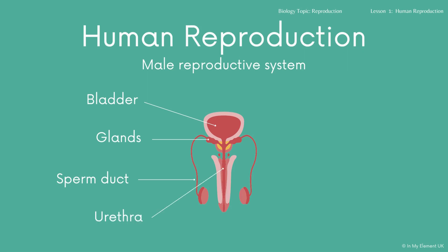You've also got the urethra, which is linked to the bladder. You can see the bladder up here and the glands linked either side. We've also got the erectile tissue, which surrounds the urethra. And we've got the testes — that's where the sperm will be stored. The scrotum surrounds the testes like a protective layer, and the testes is linked by the sperm duct. The sperm will travel up through it, and the glands add a liquid to form semen, which then travels out through the urethra.